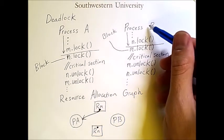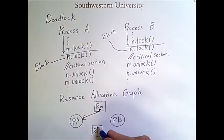Then, process B claims resource N. So we draw an arrow from N to B.